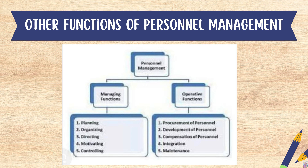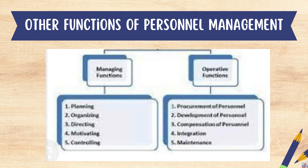Now let's go to the other functions of personnel management based on this picture. Personnel management has two functions: managing functions and operation functions. Under the managing functions: number one is planning, number two is organizing, number three is directing, number four is motivating, and number five is controlling. Under the operation functions: number one is procurement of personnel, number two is development of personnel, number three is compensation of personnel, number four is integration, and number five is maintenance.